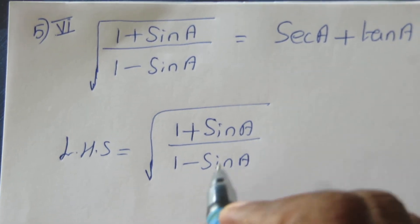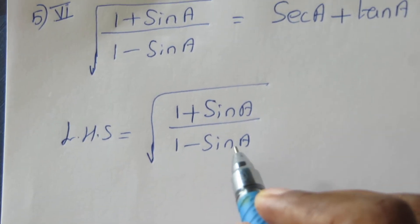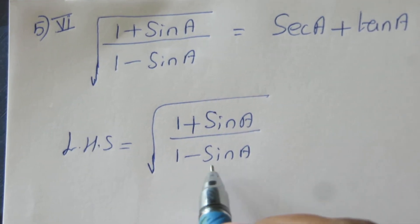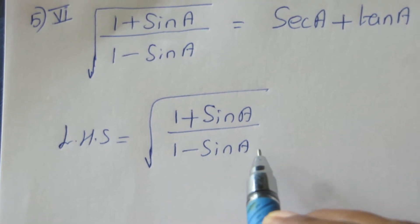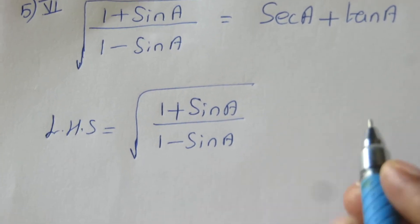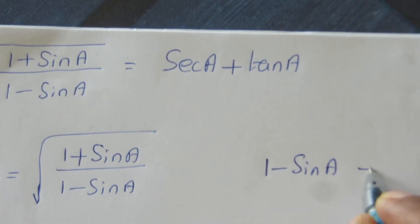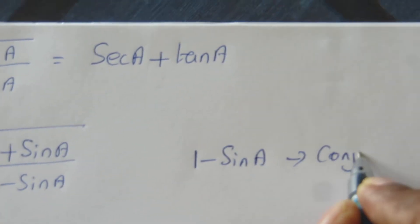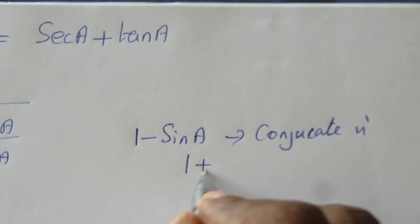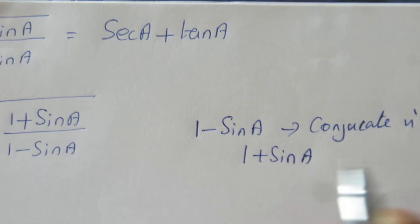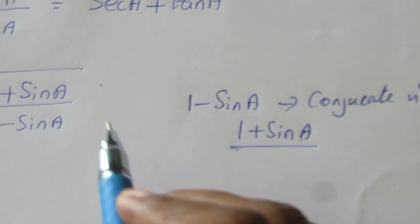The rationalizing denominator means the conjugate of 1 minus sin A, which is 1 plus sin A. So we multiply both numerator and denominator by 1 plus sin A.